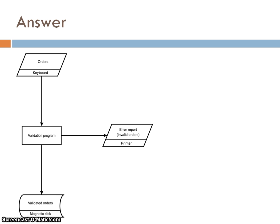Here is a flowchart that shows that the process, validation program. The orders come in through a keyboard, they are stored into a validated order store on the magnetic disk, and an error report is sent of invalid orders to the printer.